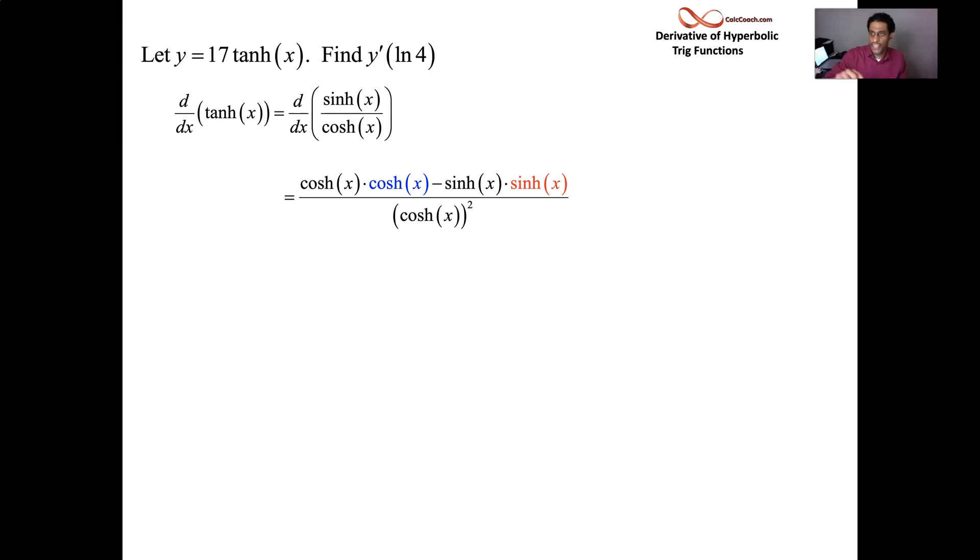Take the derivative of the numerator. Hyperbolic sine's derivative is hyperbolic cosine in blue there. Put a minus sign. Leave the numerator alone. Take the derivative of the denominator. Hyperbolic cosine's derivative is hyperbolic sine in red there. And these guys are squared. Cosine hyperbolic squared and sine hyperbolic squared with a minus sign in between them. And we just showed that that identity is a 1.